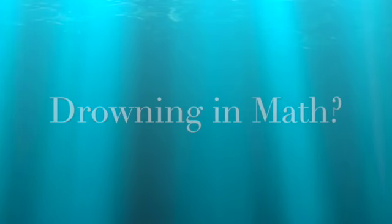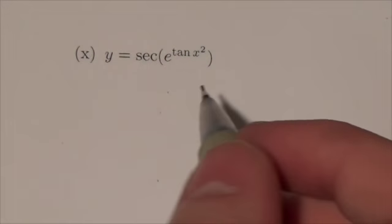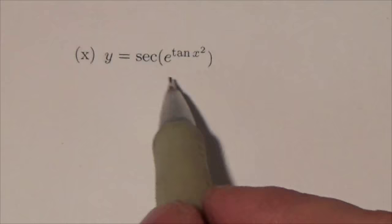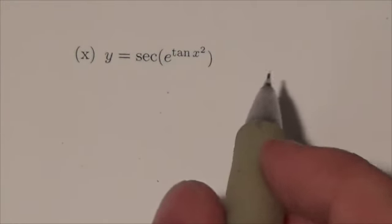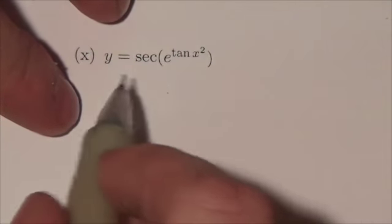Alright, hi everybody. This is the Math 31 exponential logarithmic functions review, question 1x. A little bit going on here, actually quite a bit. We've got the secant of an exponential function of the tangent of x squared. So again, we got a chain of functions going on. We're going to use a chain rule but we're just going to kind of knock this off a function at a time here.